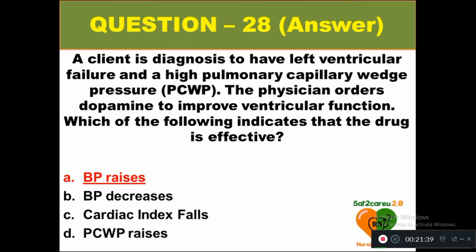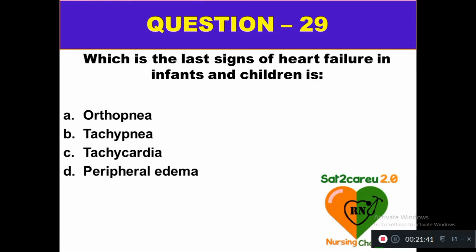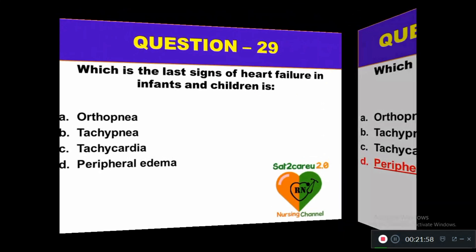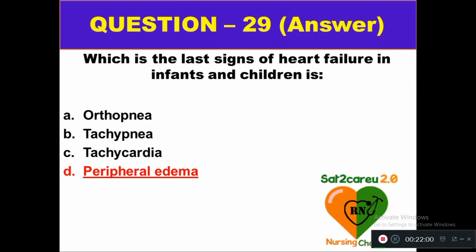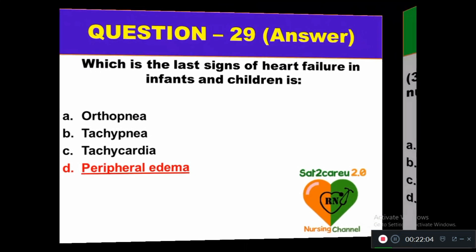Question 29: Which is the last sign of heart failure in infants and children: option A orthopnea, option B tachypnea, option C tachycardia, option D peripheral edema. The last sign of heart failure in infants and children is option D — peripheral edema.